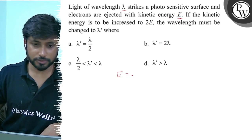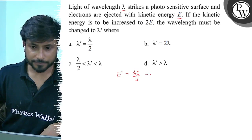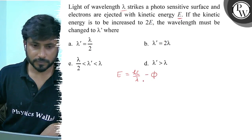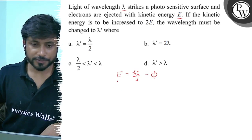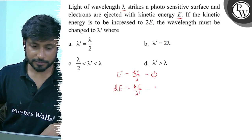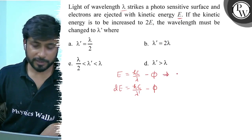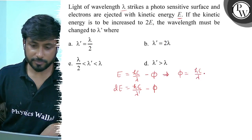So, the first equation is E equals hc by lambda minus φ. Now, what is the second case? The kinetic energy is doubled. So, the second equation is 2E equals hc by lambda dash minus φ. These are the two equations.